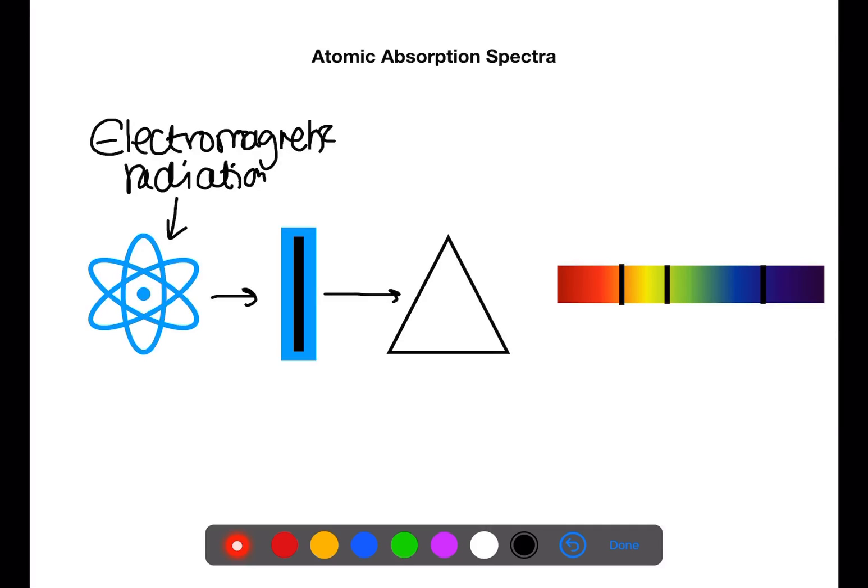We then get a spectrum where we can see missing lines on the spectrum. These missing lines represent the electrons being excited to higher energy levels using the electromagnetic radiation.